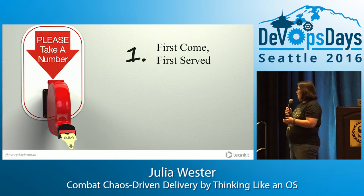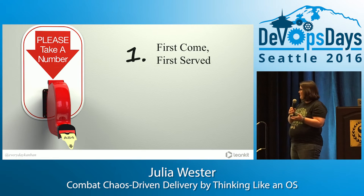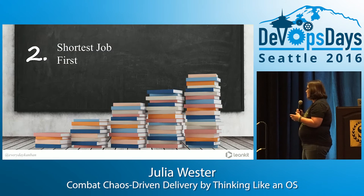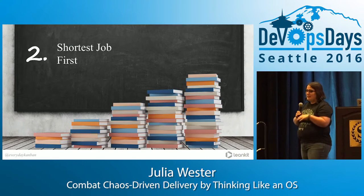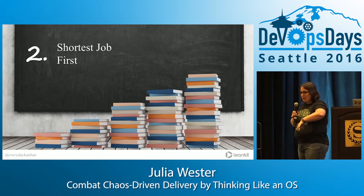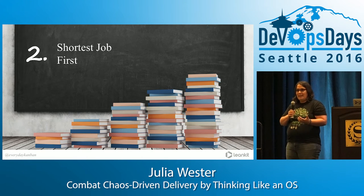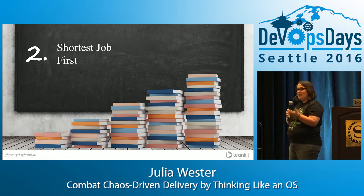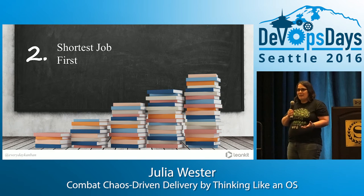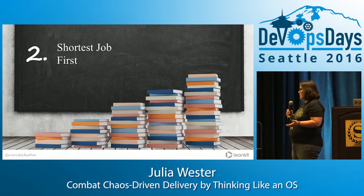First come, first served is really best for homogenous work, and that's not us usually. The second is putting short jobs in front of long jobs so they don't get stuck behind these monoliths. But the problem is that we're really bad at estimating most of the time, and often we don't have a lot of information about duration, so we're just shooting in the dark. That's really not feasible for us.